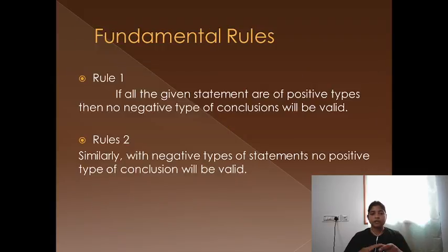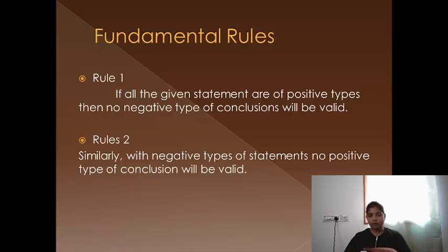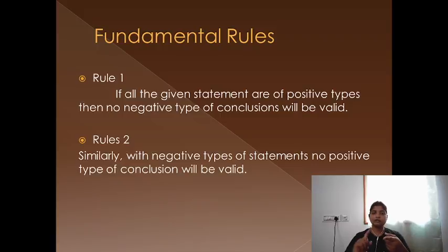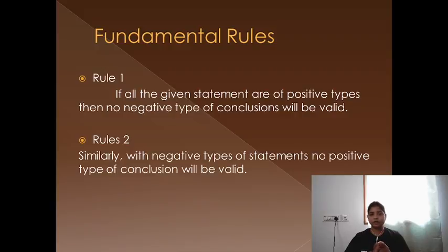Rule number one: if the given statement is of positive type, then its negative type conclusion will be invalid. For example, if it is given that all pen is paper, then 'no pen is paper' becomes invalid, but 'some pen is paper' will be valid because it is a positive conclusion. Rule number two: if the statement is of negative type, then no positive type of conclusion will be valid. Simply put — positive statement gives only positive valid conclusions; negative statement gives only negative valid conclusions.